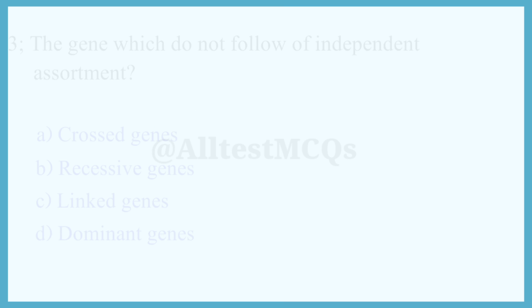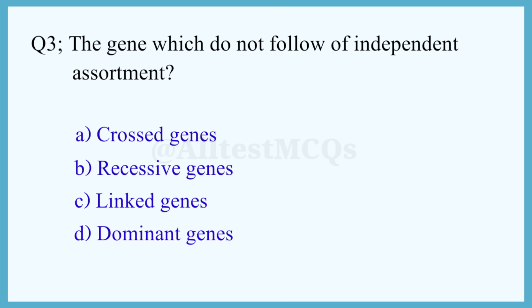Q3. The genes which do not follow independent assortment — the correct answer is option C: Linked genes.